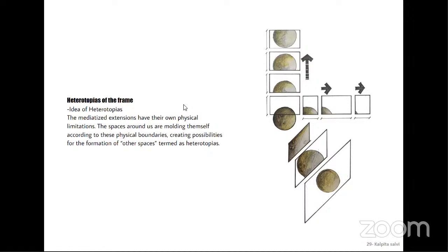Michel Foucault introduces the concept of heterotopia in his essay 'The Other Spaces,' describing heterotopias as spaces that disrupt the normal structural pattern of everyday life by pushing away the boundaries of the social. Mediatized extensions have their own physical limitations, and the spaces around us are molding themselves according to these physical boundaries, creating possibilities for the formation of these 'other spaces' termed as heterotopias.